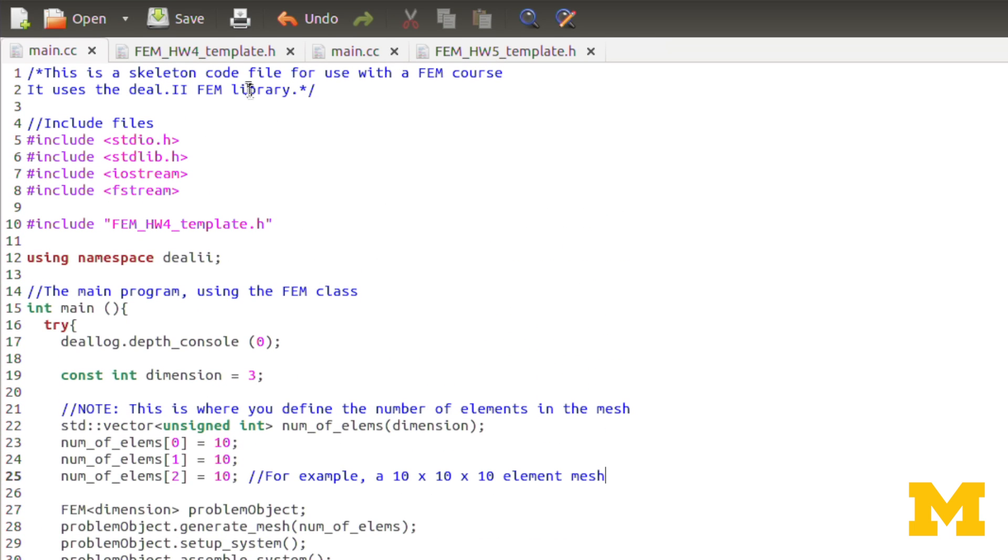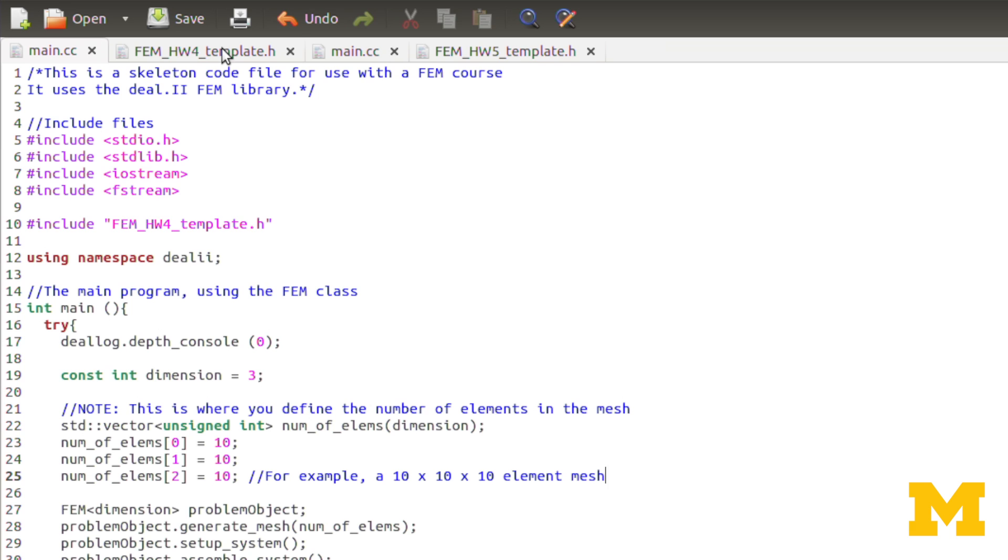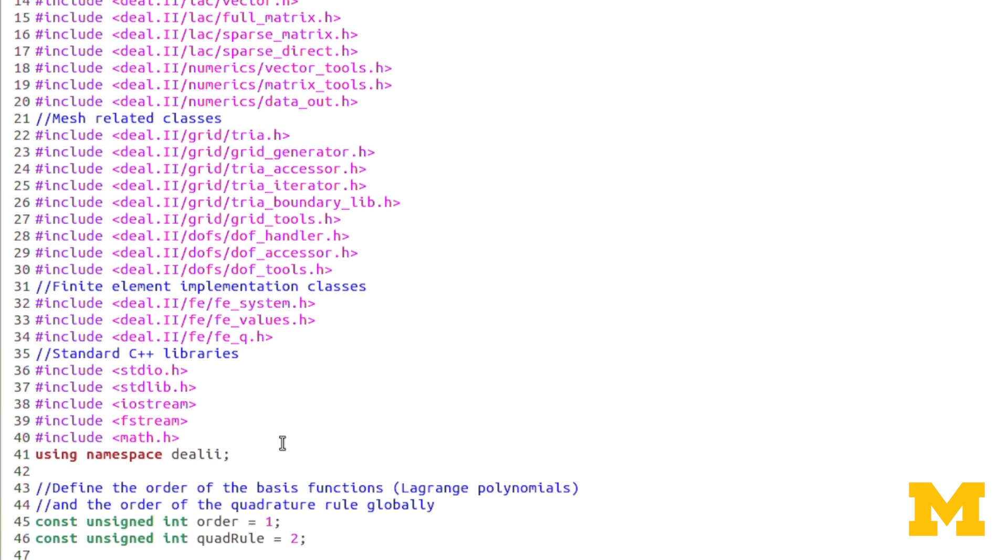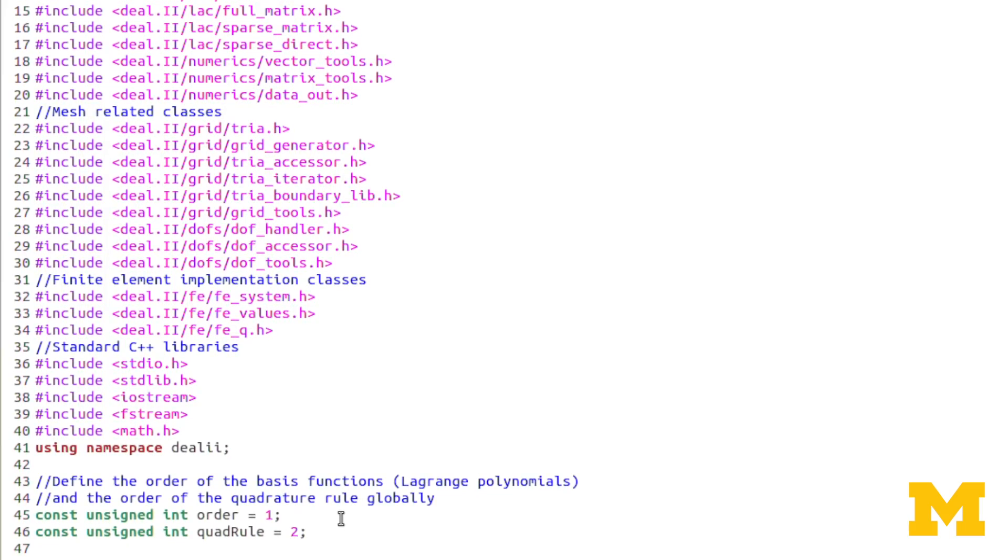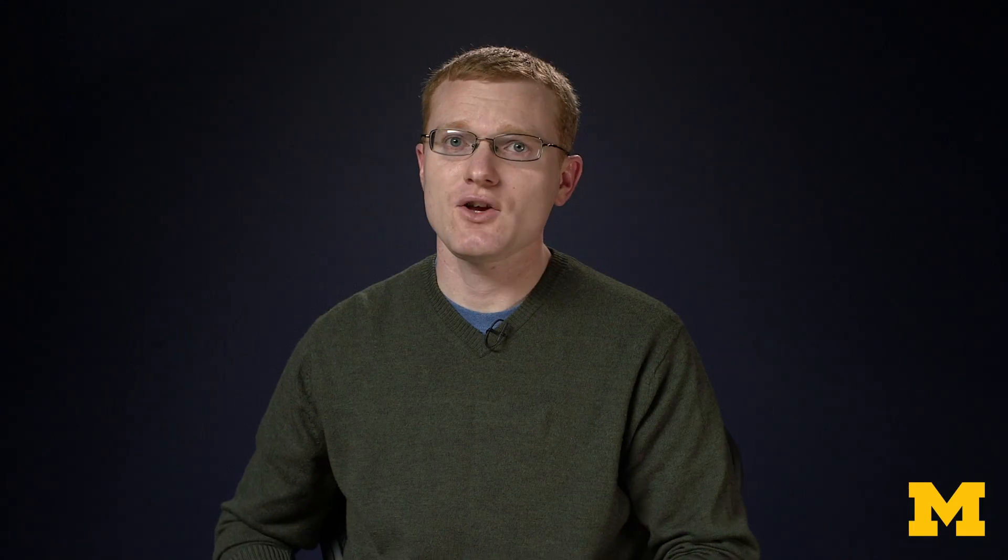We create our object and go through the same steps as before. We can go straight over to our header file. Now we have our same header files here, but in this homework assignment we are going to be using DL2's quadrature rules and basis functions. That will make things a lot easier on the coding end, but it does change the structure of our code a little bit.